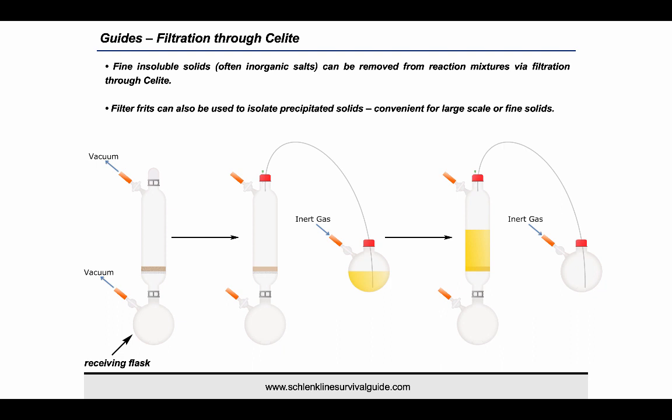Caution is required when backfilling with inert gas to ensure that the Celite layer is not disturbed. The reaction mixture can then be transferred into the filter stick by cannula transfer and a partial static vacuum can be applied to the receiving flask to initiate the filtration. The solids and Celite can be washed and extracted with an appropriate solvent, and then the filter stick can be replaced with a greased glass stopper to enable further manipulations with the solid-free filtrate. Filter sticks are also a convenient way to isolate fine solids. In these cases the Celite is omitted, and once the filtration and washing steps are complete, the solid can be dried directly on the frit under vacuum prior to isolation in the glove box.